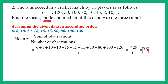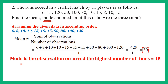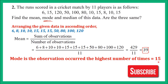Now let us find the mode. Mode is the most frequent observation. Looking at this data, 10 repeats twice and 15 repeats 3 times. So the most frequently occurring observation is 15. Therefore the mode of this data is 15. Mode is the observation occurred the highest number of times, and here it is 15.